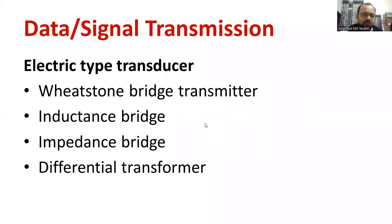And the third one is called electrical or electronic type transducer. We can use the Wheatstone's bridge. Bridge balancing principle can be used. Similarly, there is another bridge called inductance bridge. Then, we can use the impedance bridge. Also, we can go ahead with differential transformer. These are the different methods concerning electrical or electronic data or signal transmission method.